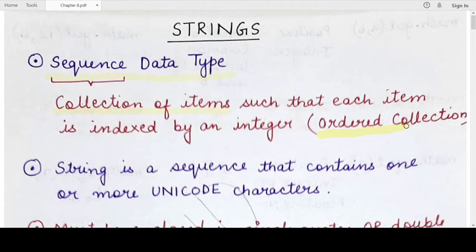As you'll study ahead, sequence data types can be ordered or unordered. In ordered sequence data types, the order or the position at which different values are present matters. Whereas in unordered data types, the position at which different elements are present does not matter.